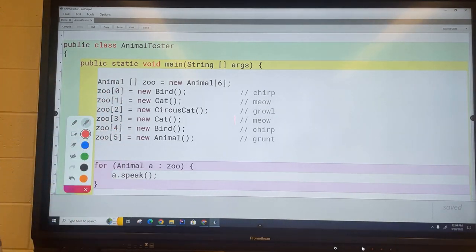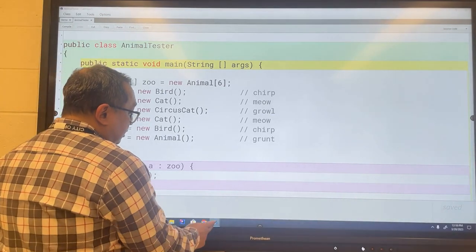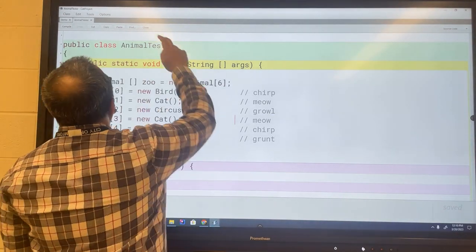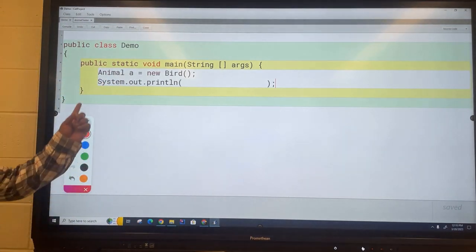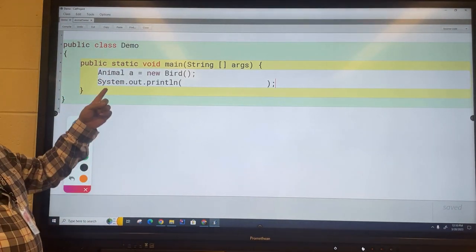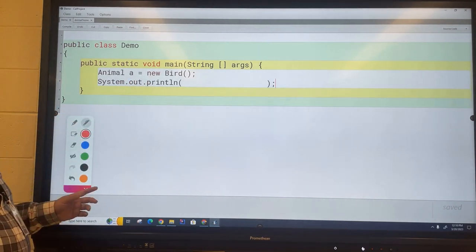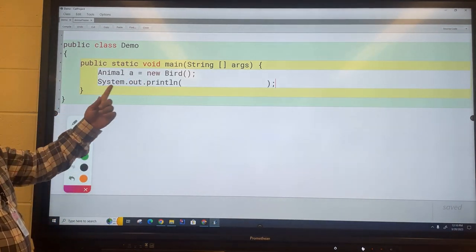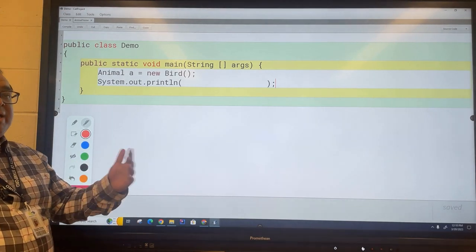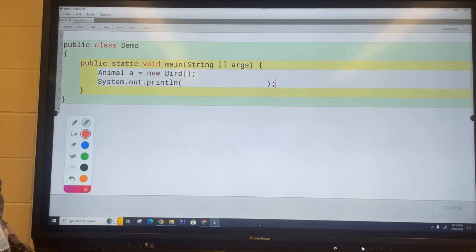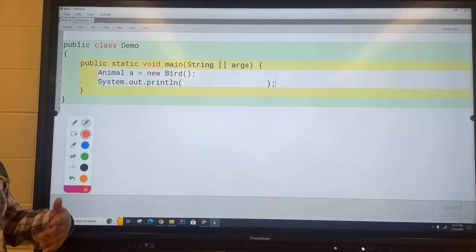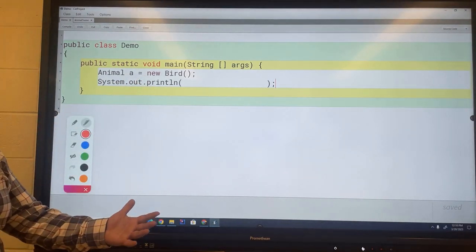So to show you how to do that I'm going to take a step back here. We have a single pointer and we have this animal pointer which is pointing to a bird, and what we're going to do is we're going to ask the Java virtual runtime engine is a pointing to a bird. That's the question we want to ask.